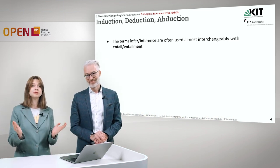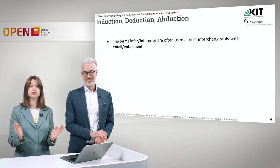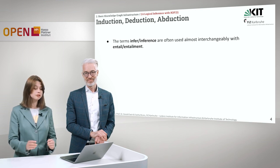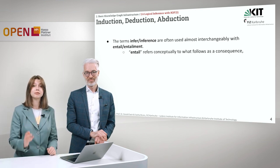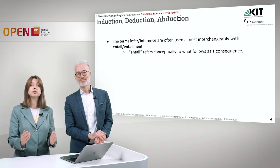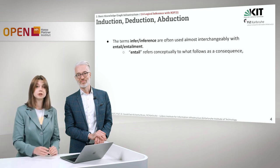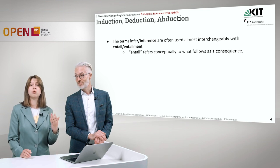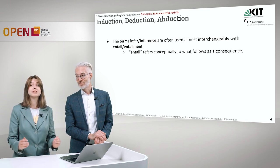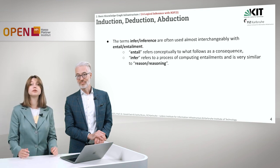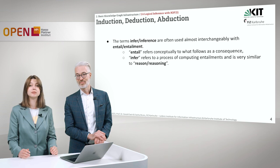There are two terms that are often used quite interchangeably, and these terms are inference and entailment. However, there is a slight difference between them. Entail refers conceptually to what follows as consequence. For example, when a person says that he or she is an only child, it entails the information that the person doesn't have any siblings. On the contrary, infer refers to a process of computing entailments and is very similar to reason or reasoning.